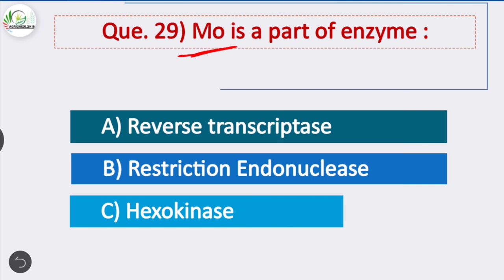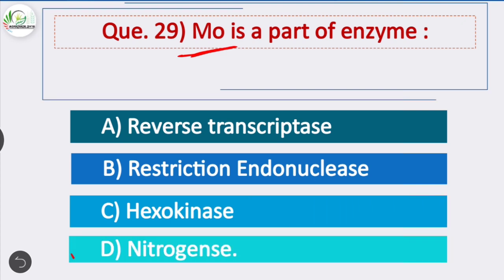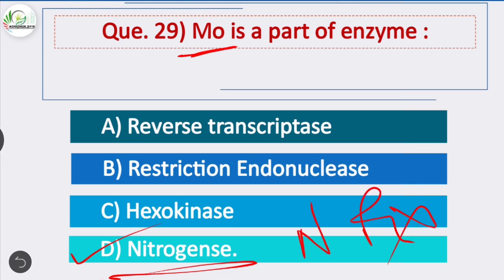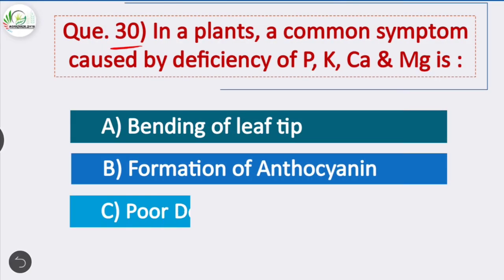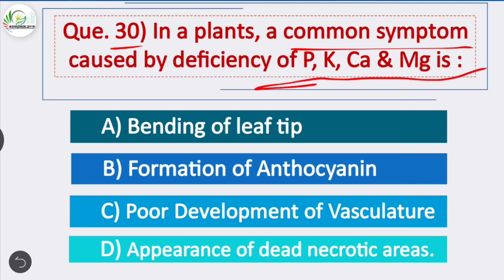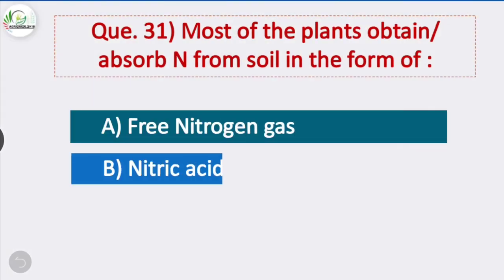Question 29: Molybdenum is part of which enzyme? Option D is correct — molybdenum is part of the enzyme nitrogenase. Molybdenum activates the enzyme nitrogenase and is involved in nitrogen metabolism. Question 30: In plants, a common symptom caused by deficiency of phosphorus, potassium, calcium, and magnesium is — option D is correct — appearance of dead necrotic areas, that is necrosis.